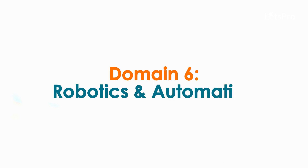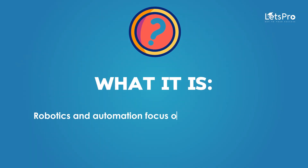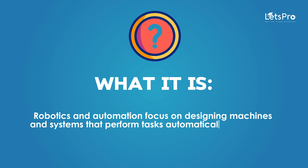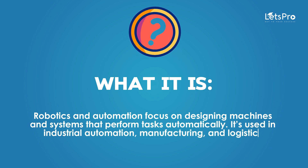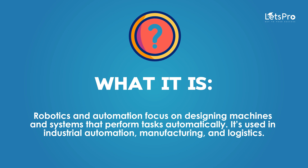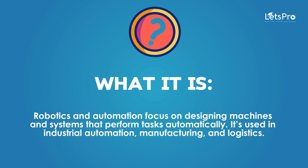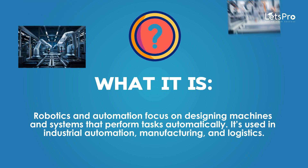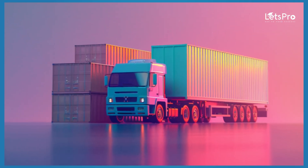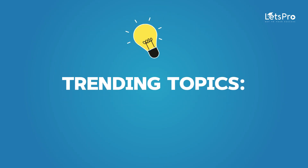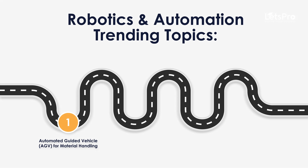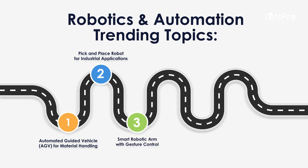Domain 6: Robotics and Automation. Robotics and Automation focus on designing machines and systems that perform tasks automatically. It is used in industrial automation, manufacturing and logistics. Trending Topics: Automated Guided Vehicle for Material Handling, Pick and Place Robot for Industrial Applications, Smart Robotic Arm with Gesture Control, Warehouse Automation System, Self-Balancing Robot for Stability Control.